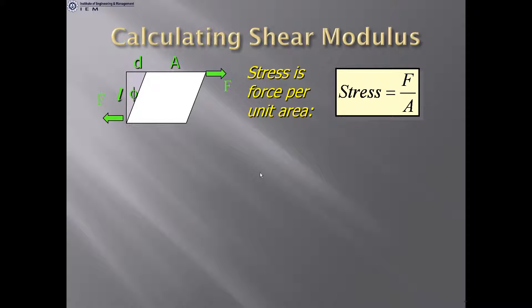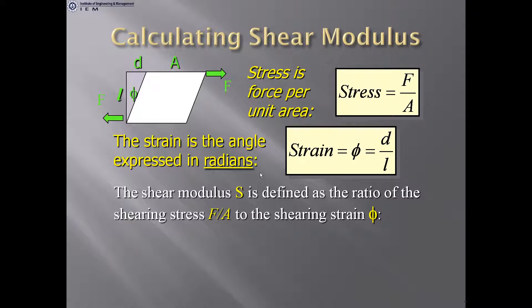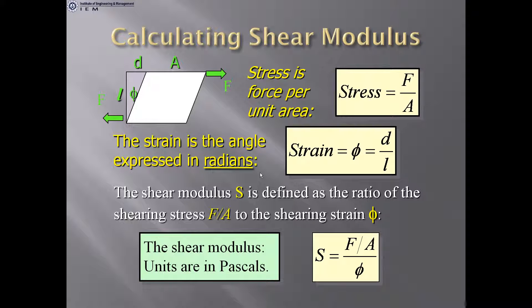Calculating shear modulus: stress = F/A (force per unit area). Strain = φ = tan φ = D/L. Since angle φ is very small, φ ≈ tan φ. The shear modulus S is defined as the ratio of shearing stress (F/A) to the shearing strain (φ). Shear modulus units are Pascals. S = (F/A) / φ.